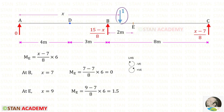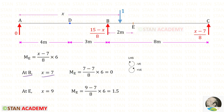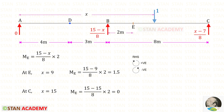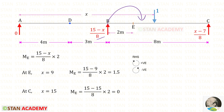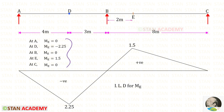Now, let us keep the unit load between B and E. RC is acting in the anticlockwise direction, so it will be positive, and the distance is 6. At B, X will be 7, so Me will be 0. At E, X will be 9, so Me will be 1.5. Now, let us keep the unit load between E and C. We can use the right-hand side rule. RC is acting in the clockwise direction, so it will be positive, and the distance is 2. At point E, X will be 9, so Me will be 1.5. At point C, X will be 15, so Me will be 0. Using these, we can draw the ILD for Me.